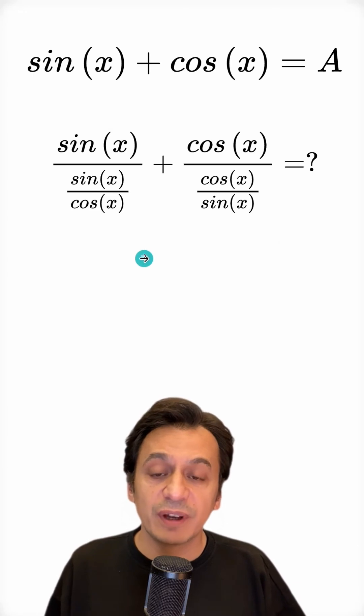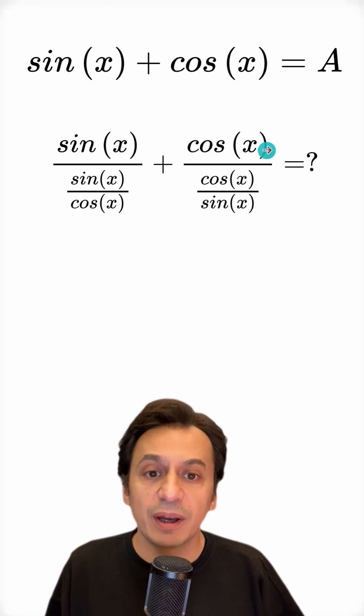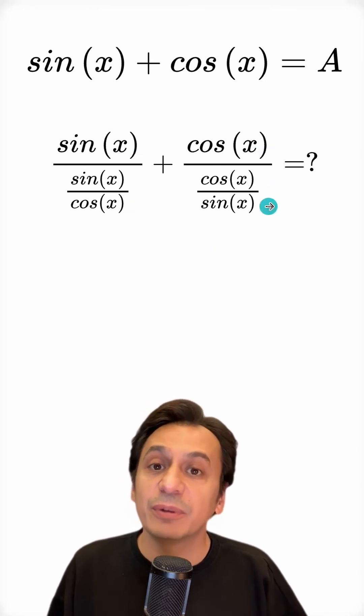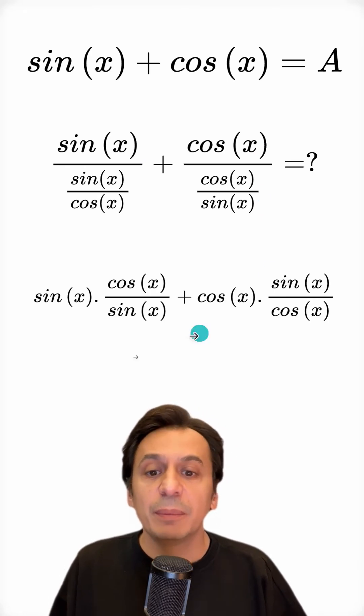Now, I will apply the division rule for fractions. I will write sine x as it is, and flip the expression in the denominator and multiply. Here as well, I will write cosine x as it is, and flip the expression in the denominator and multiply.